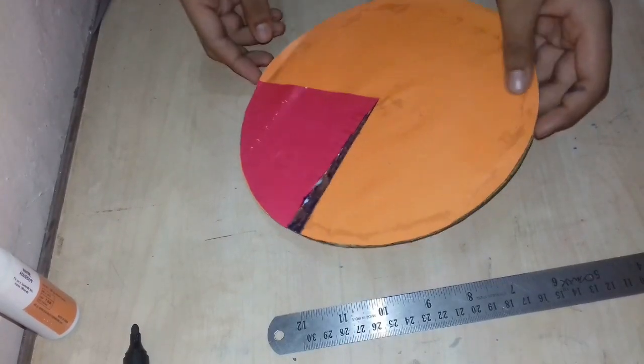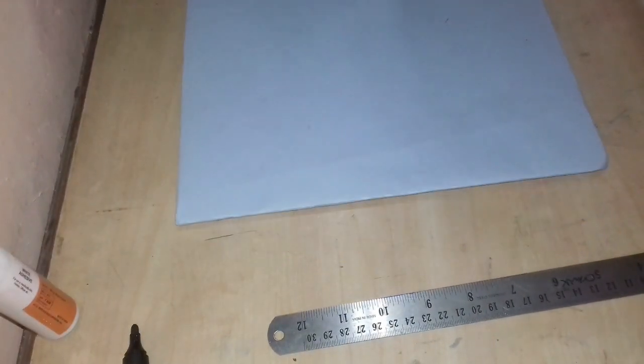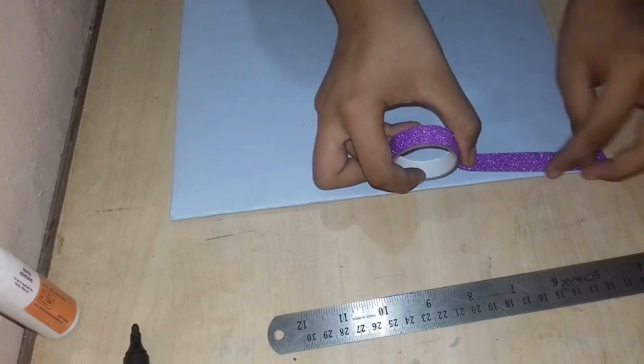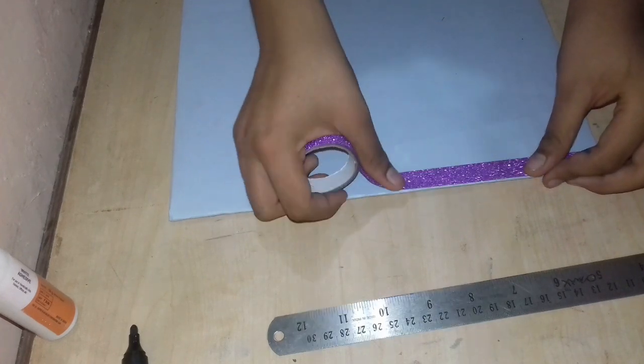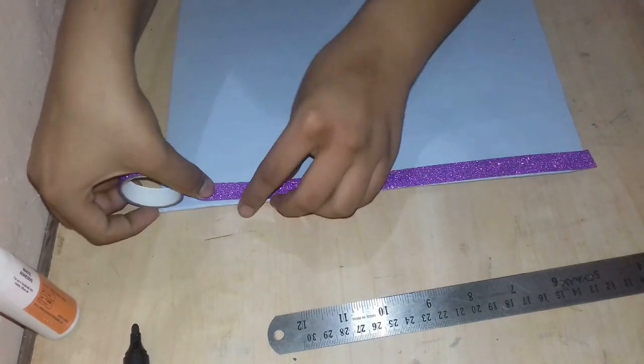This is how the pie chart representing composition of air is ready. Now make the border of the base with any tape that you want to use. I have used purple glitter tape.